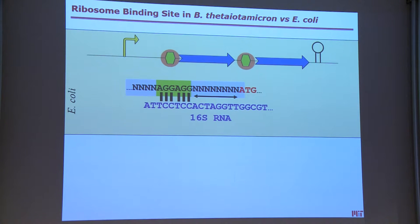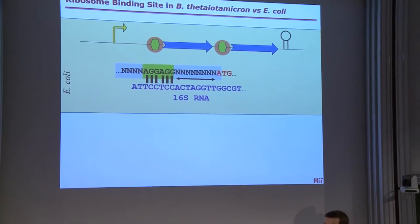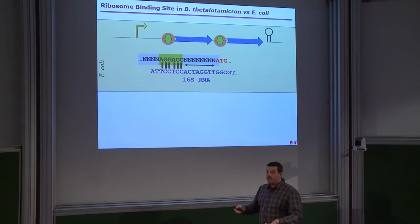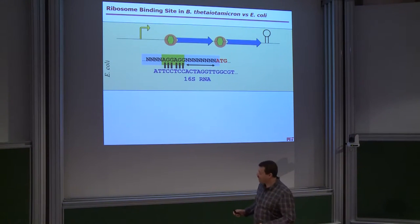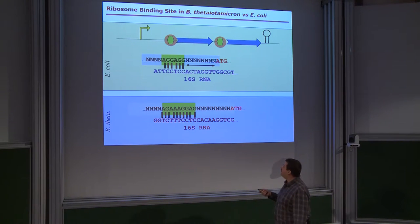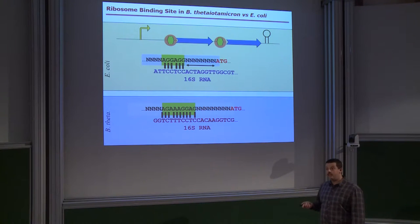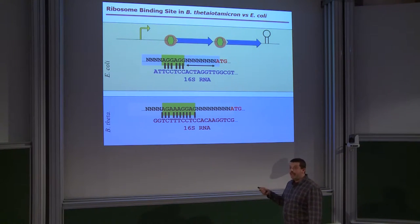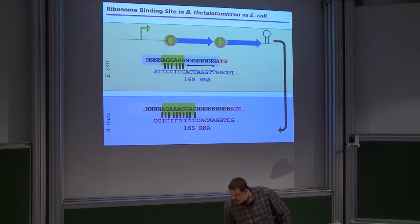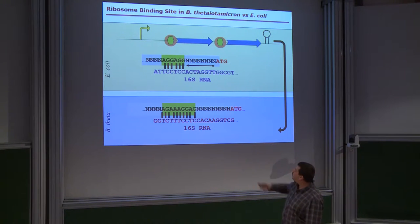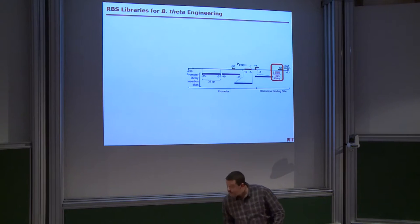In E. coli, the ribosome binding site is well defined, with a consensus sequence of AGG-AGG that matches well to the end of the 16S rRNA. By modifying sequences on both sides of or within the ribosome binding site, you can change gene expression levels from zero to maximum. In Bacteroides, the consensus sequence of the ribosome binding site is not that different — it matches to the end of the 16S rRNA just as well. So the idea was: if we do exactly the same thing as in E. coli, that should work. We took our PNBU2 plasmid, cloned a known constitutive promoter from Theta in front of it, and started making libraries by randomizing sequences around the Shine-Dalgarno.